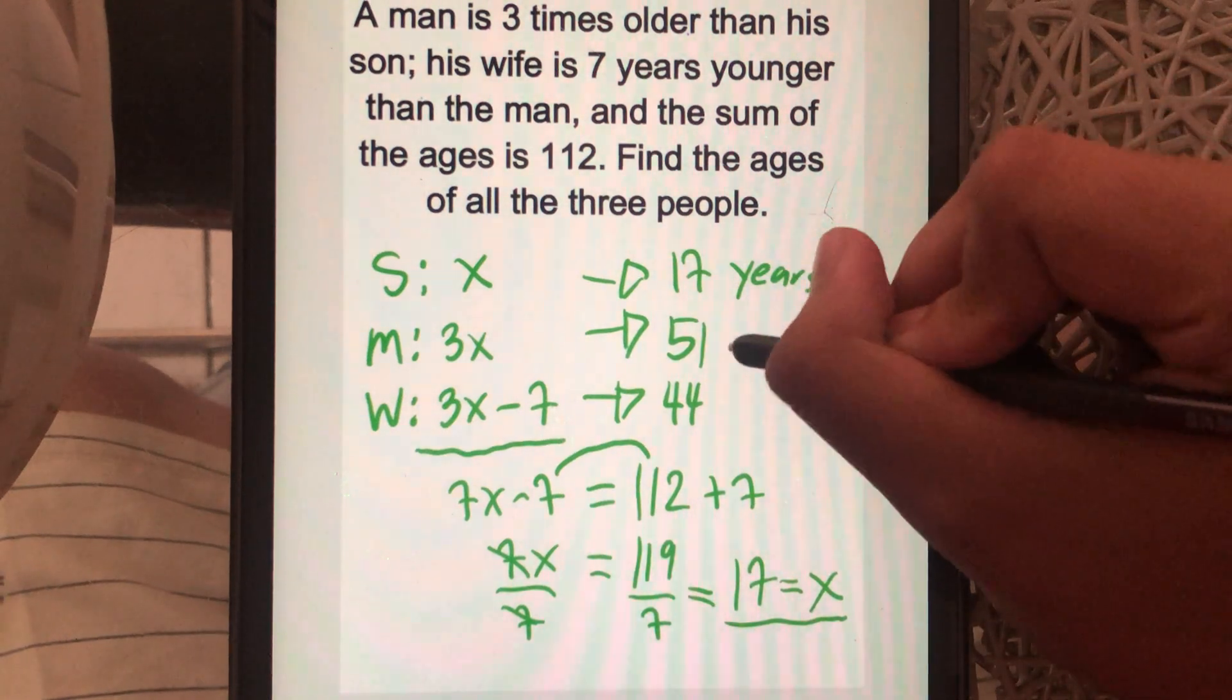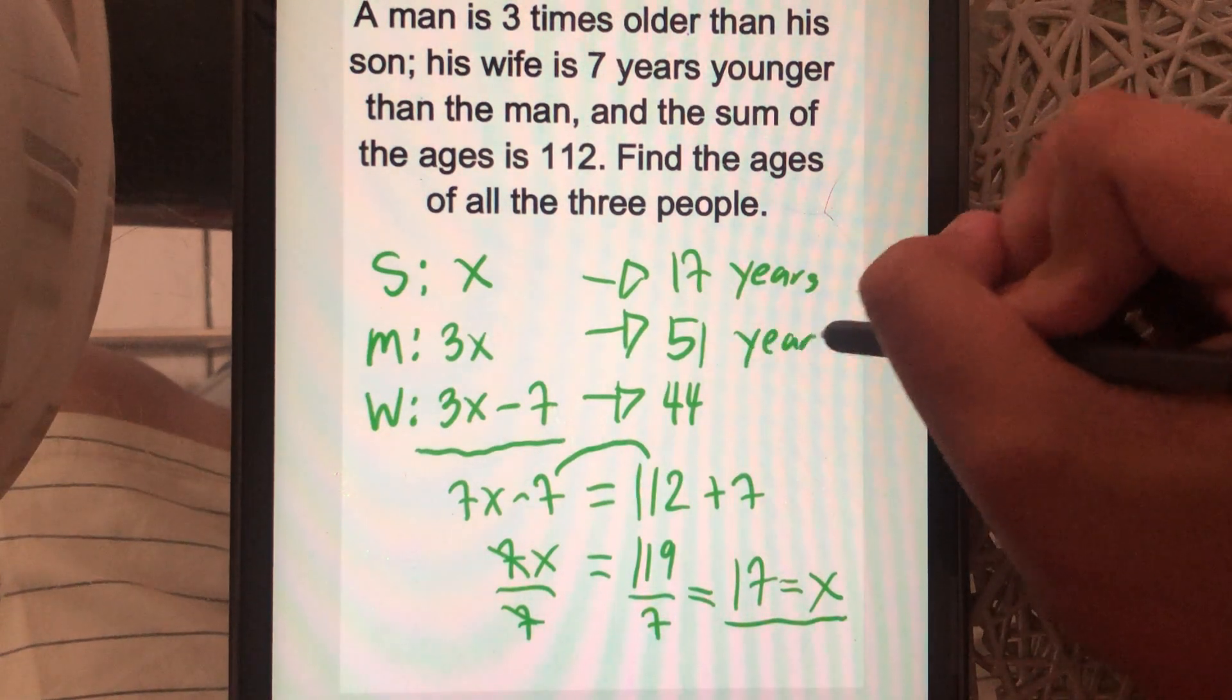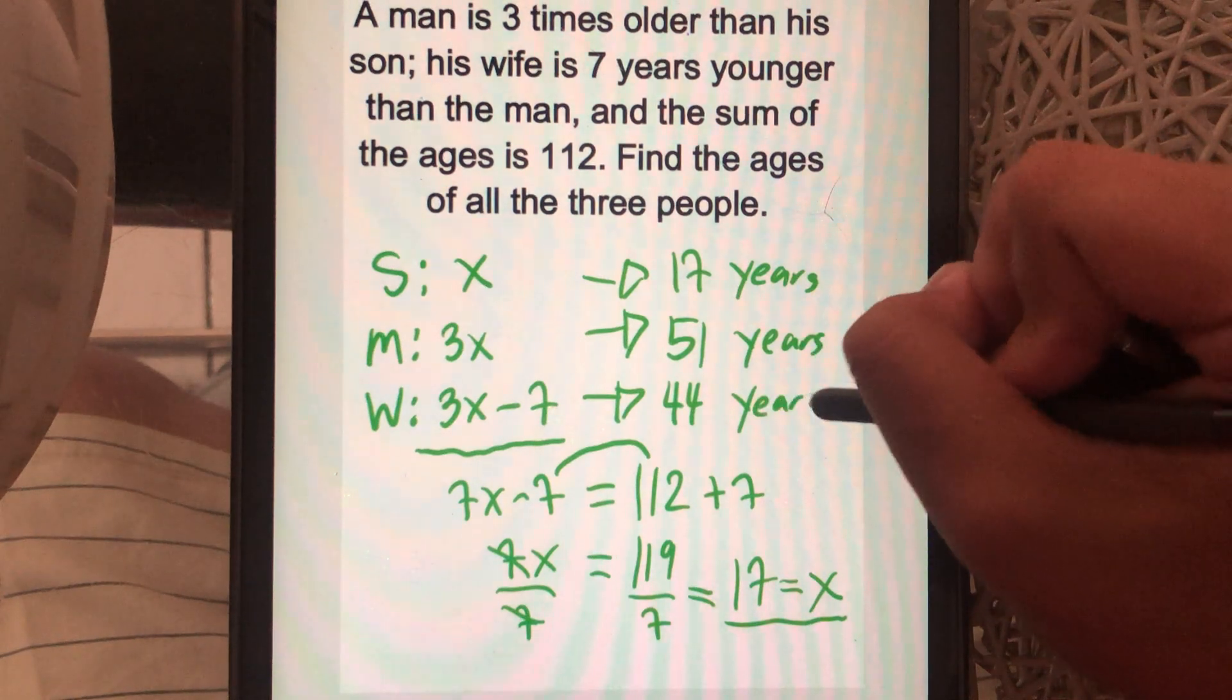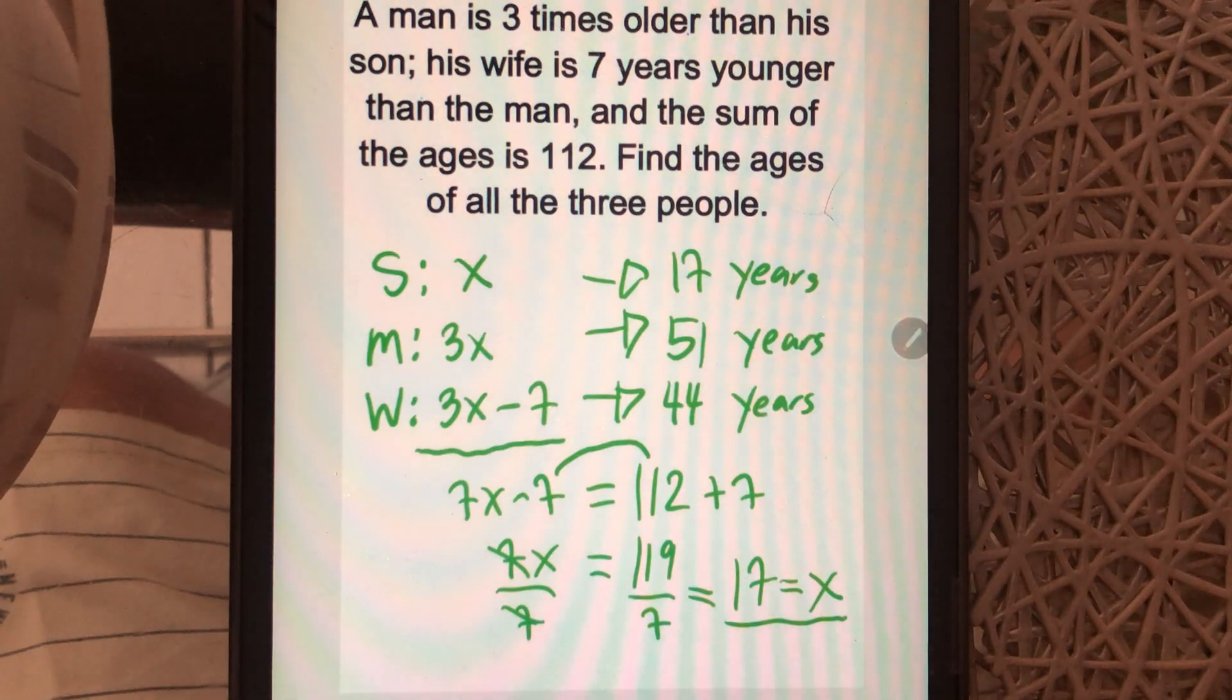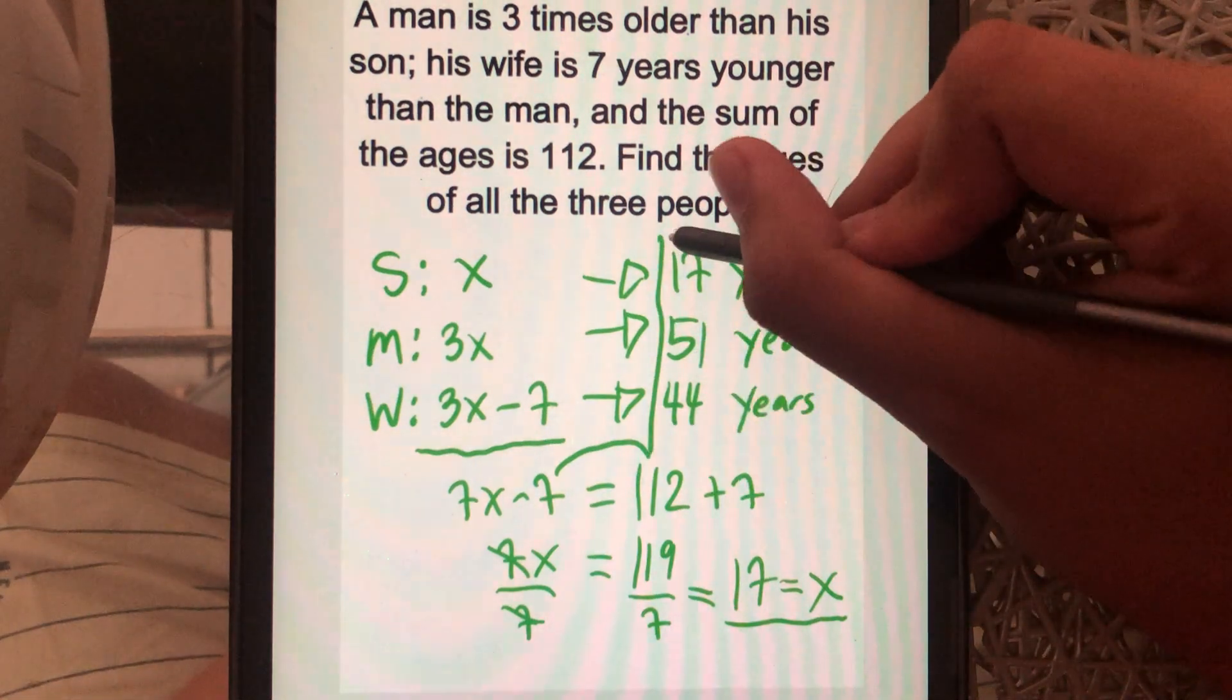17 years, 51 years, and 44 years. These are the ages of all the three.